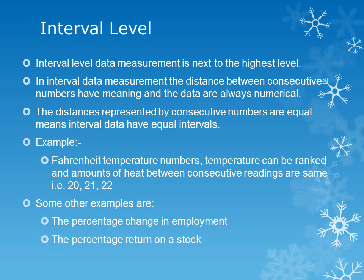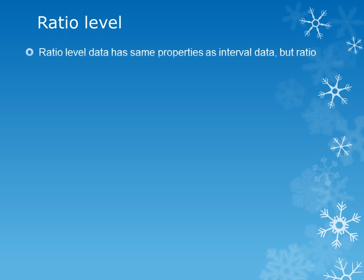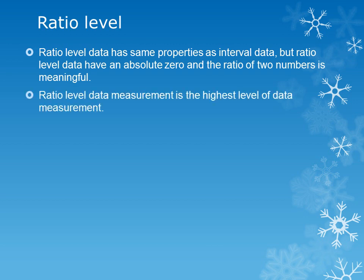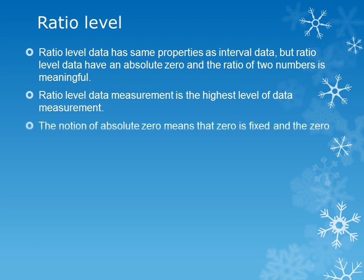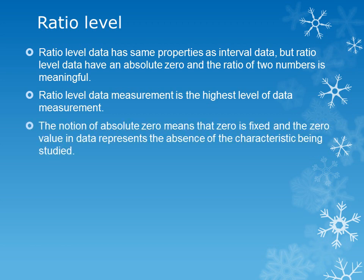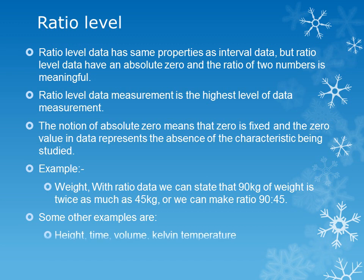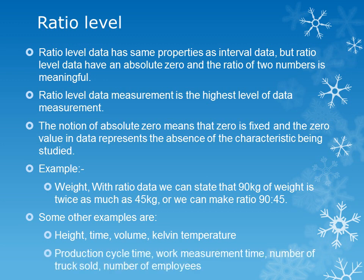Next is ratio level. Ratio level data has the same properties as interval data, but ratio level data has an absolute zero and the ratio of two numbers is meaningful. Ratio level data measurement is the highest level of data measurement. The notion of absolute zero means that zero is fixed, and the zero value represents the absence of the characteristic being studied. For example, with weight we can state that 90 kg is twice as much as 45 kg, so we can take the ratio of 90 to 45. Some other examples are height, time, volume, and Kelvin temperature.